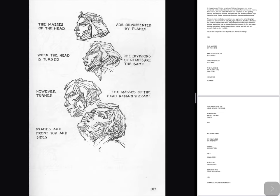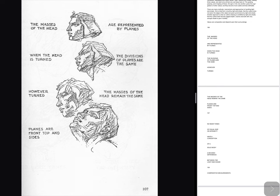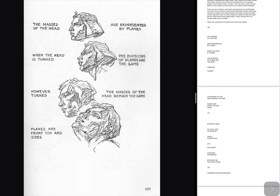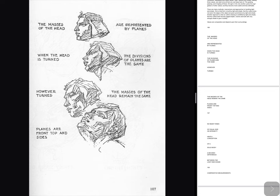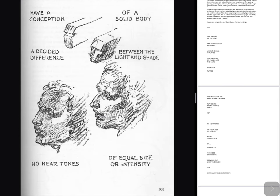The masses of the head are represented by planes. When the head is turned, the divisions of planes are the same. However turned, the masses of the head remain the same. Planes are front, top and sides. No two tones of equal size or intensity should appear near each other. For a solid body, there should be a decided difference between the light and shade.